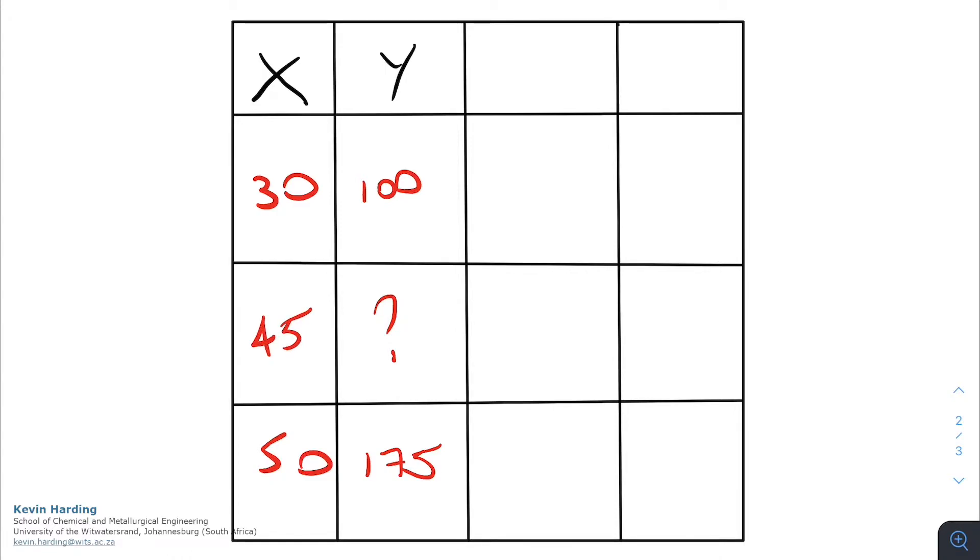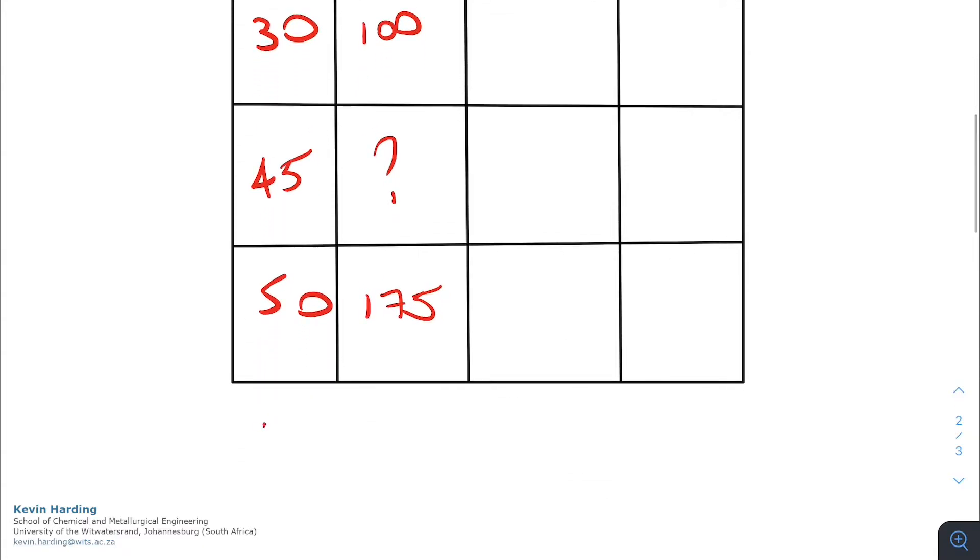Linear interpolation was a way of finding that unknown y value. Extrapolation was when we had, let's say x equals 60, and we wanted to find the y value for that.